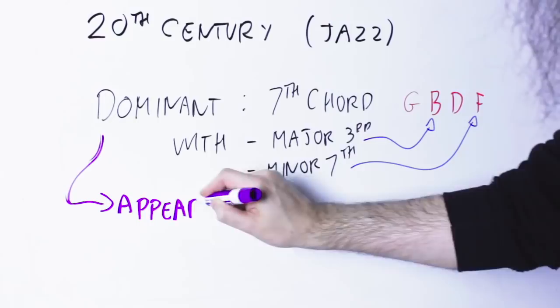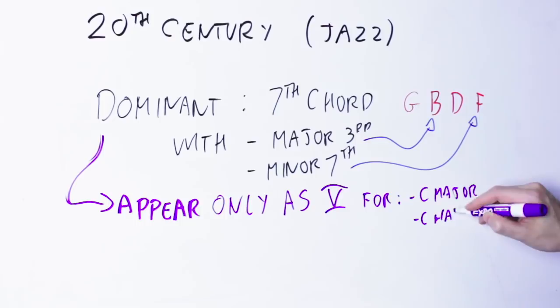After all, if we take the C major scale and the C harmonic minor scale, chords with the major third and the flat seven appear only in the fifth position. So, no problem.